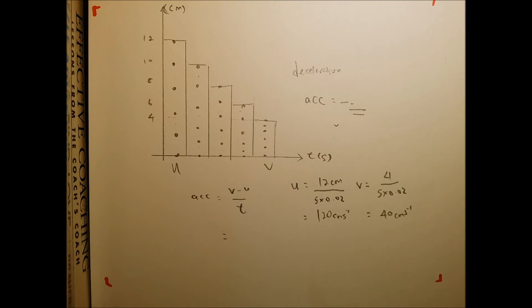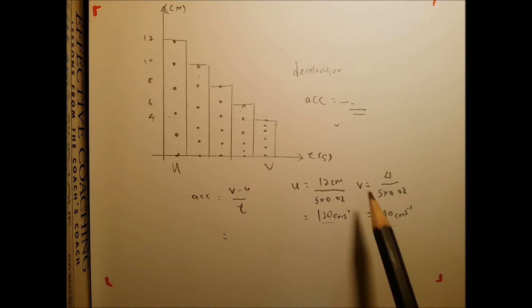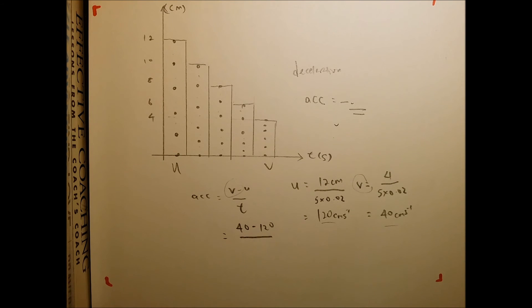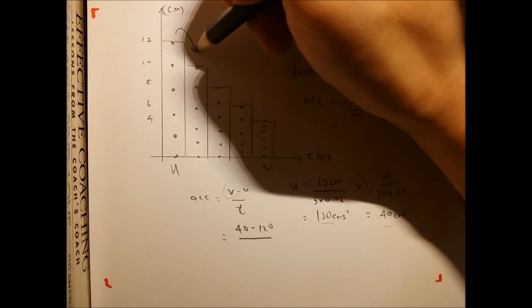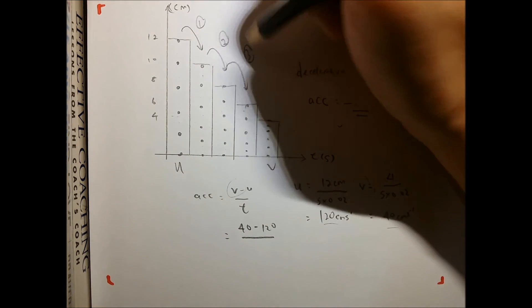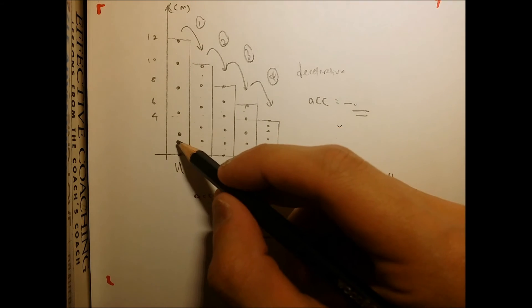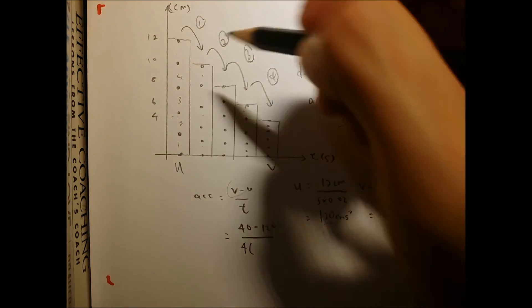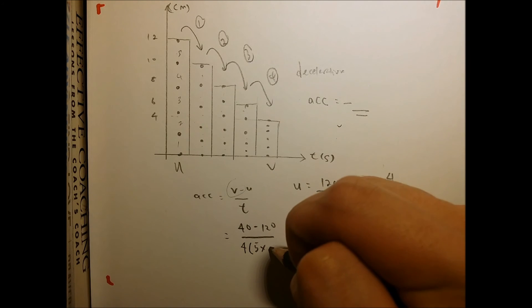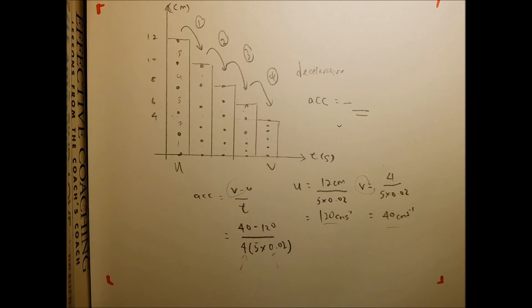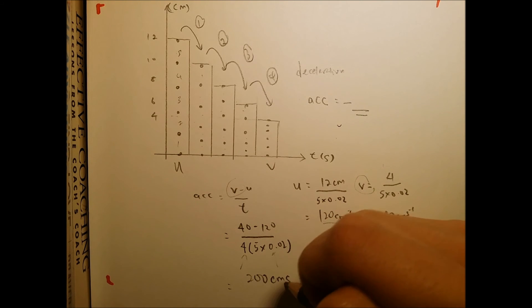Treating this as a section ticker timer with 4 sections, each section having 5 intervals, the time is 4 times 5 times 0.02. So this is your number of sections multiplied by the time in each strip. The final answer for acceleration is 200 cm per second squared.